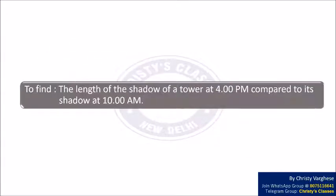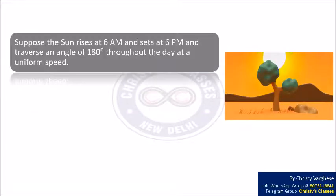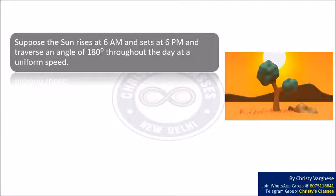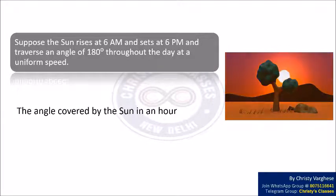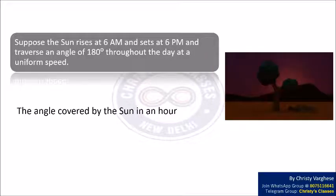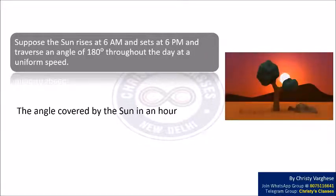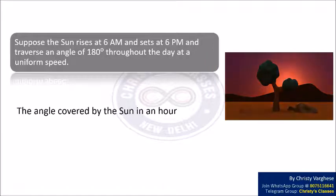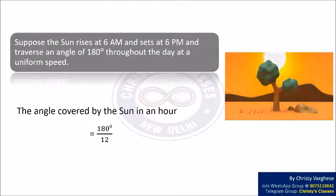We are going to find the length of the shadow of a tower at 4 p.m. compared to its shadow at 10 a.m. We suppose that the sun rises at 6 a.m. and sets at 6 p.m., and traverses an angle of 180 degrees throughout the day at a uniform speed. From 6 a.m. to 6 p.m. there are exactly 12 hours, so the angle covered by the sun in an hour is 180 divided by 12, which equals 15 degrees.